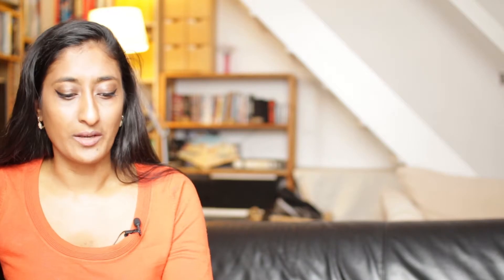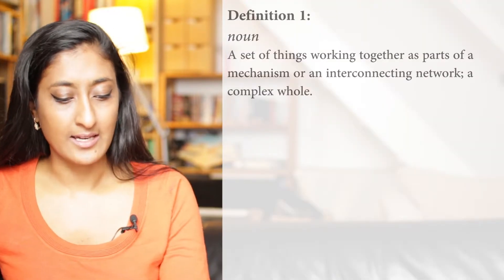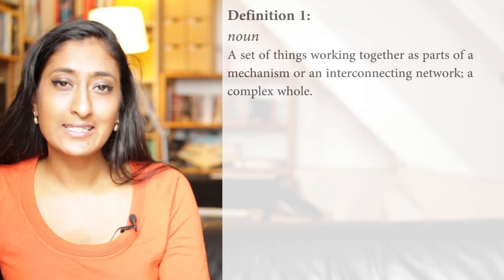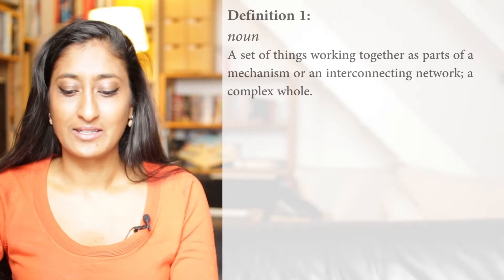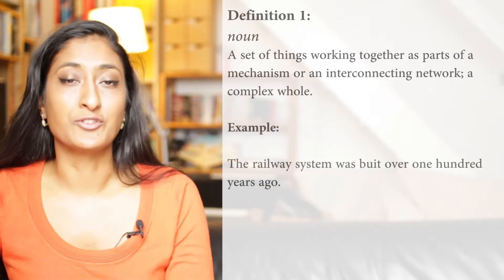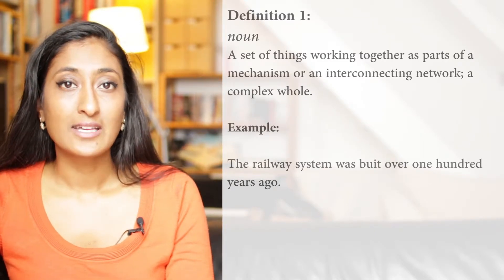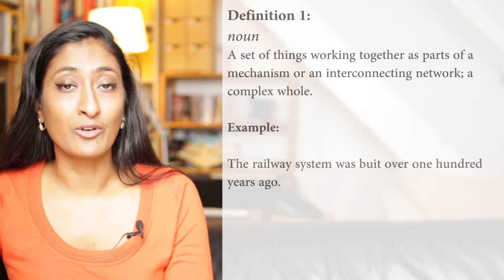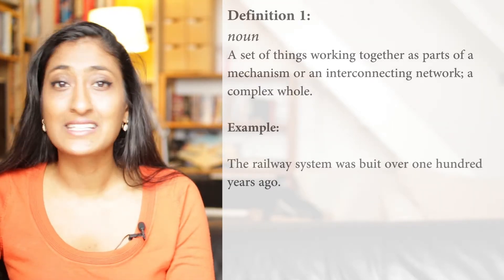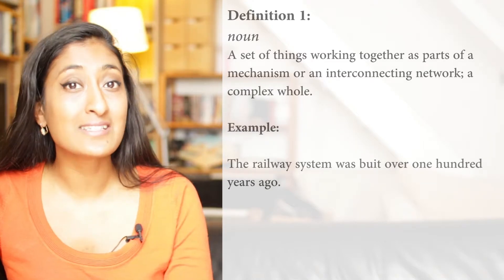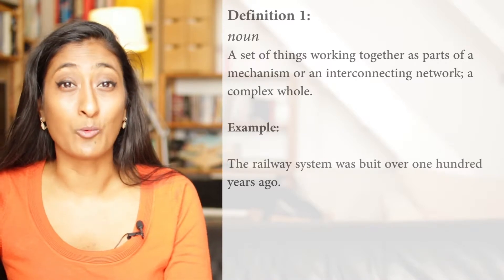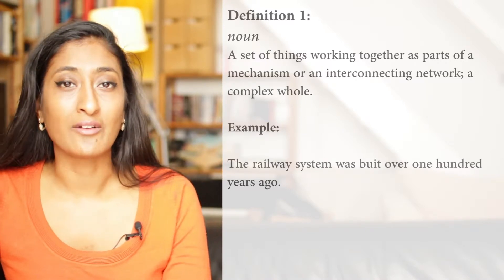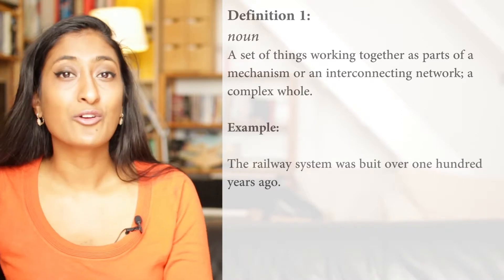All the definitions of the word system are nouns. Definition number one: a set of things working together as parts of a mechanism or an interconnecting network — a complex whole. Here's an example sentence: the railway system was built over 100 years ago. So in this case you have a network of railway lines, trains, ticketing systems — quite a complex network. When you have a complex network that's all linked together and works as a whole, then you have a system — in this case, a railway system.